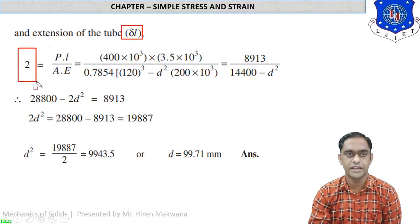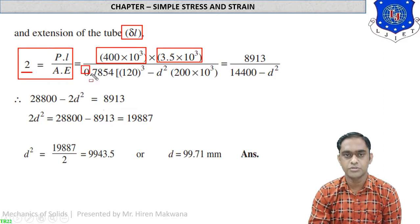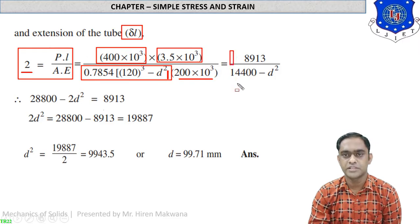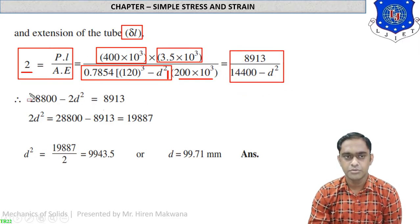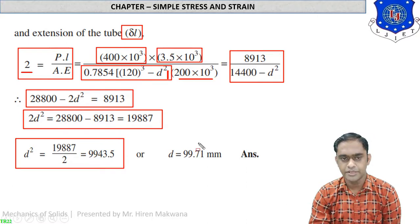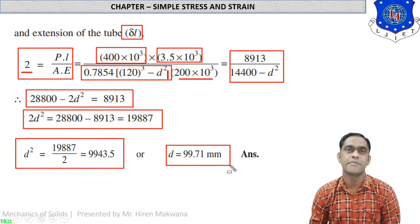This is the area in terms of small d, where small d is unknown. The formula for extension is delta_l = PL / (AE). Delta_l is already given as 2 mm. Substituting P = 400 × 10³, L = 3.5 × 10³, the area in terms of d, and E = 200 × 10³, and simplifying, we get d² = 9943.5. Taking the square root gives d = 99.71 mm.